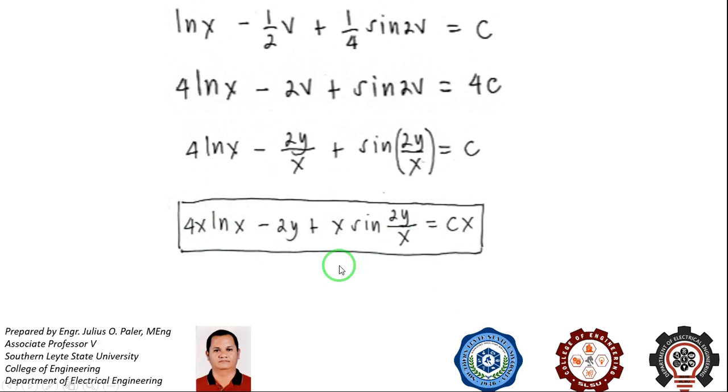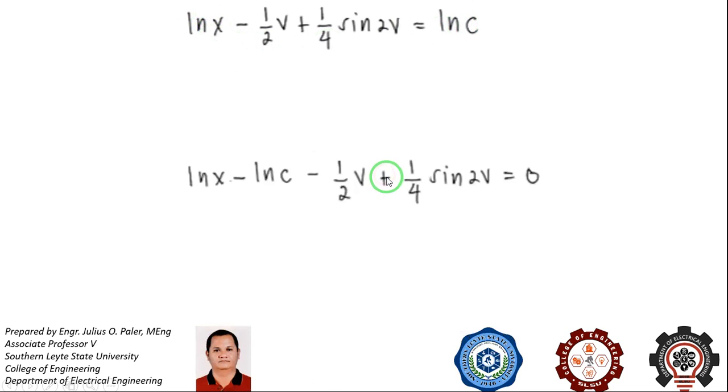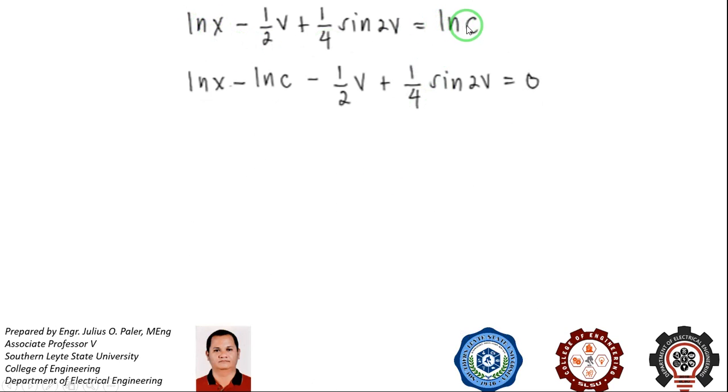However, this answer is not the same as that of the book. The solution of the book follows this one. Instead of equal to C, the book uses ln of C in order for ln of C and ln of x to be combined. So if you transpose ln of C to the left side, then ln of C will be minus. If you use properties of logarithm, this will be a ratio.